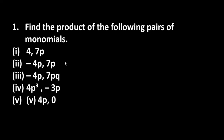Let's now start with question number one. This is from exercise 9.2. It says find the product of the following pairs of monomials. You want to take a product — that means you want to do a multiplication.